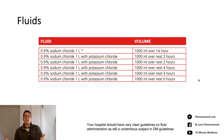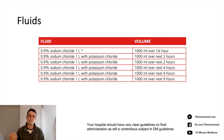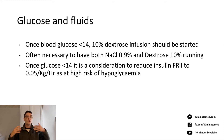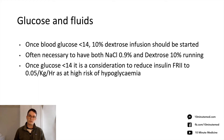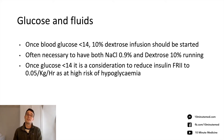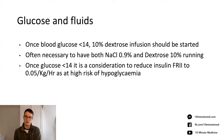There will be a fluid regime on the DKA protocol at your hospital. Once blood glucose is less than 14, an infusion of 10% dextrose should be started — it's often necessary to have both normal saline and dextrose running simultaneously. The guidelines also recommend considering reducing the insulin rate to 0.05 units per kilogram per hour at this point, and it's worth talking to a senior about whether to stop it, as these patients are at high risk of hypoglycaemia.